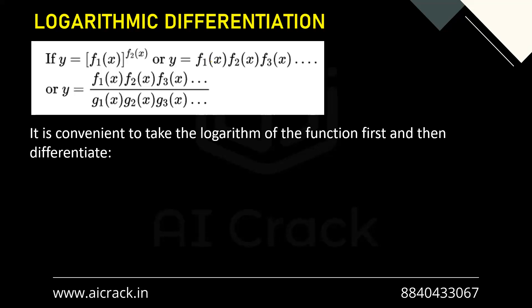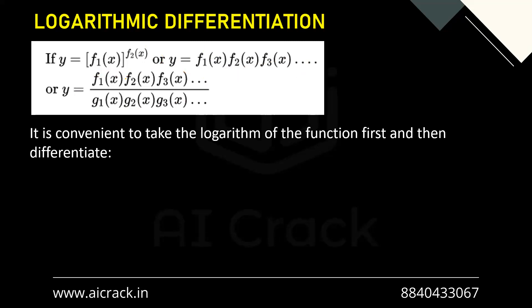In the differentiability lecture three, we studied two rules: product rule and quotient rule. But those rules are specifically meant for simpler functions. If we have very complicated functions — like a function raised to another function, or a product of multiple functions in numerator and denominator — product rule or quotient rule won't be applicable, making it a very tedious task.